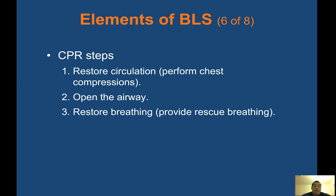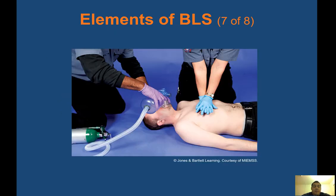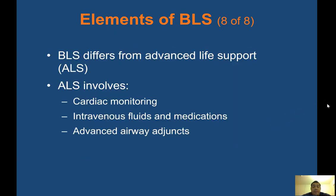CPR steps: restore circulation by performing chest compressions — for an adult, at least two inches deep at a rate of at least 100 to 120 compressions per minute. Make sure the airway is open and restore breathing by providing rescue breathing. One person can manage compressions while another focuses on the airway and bagging through a BVM connected to an oxygen tank.